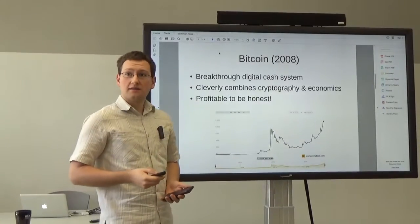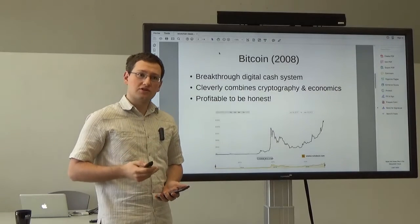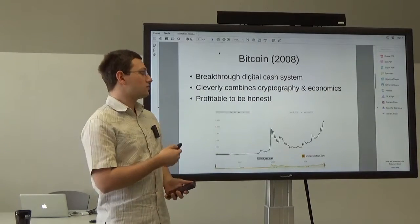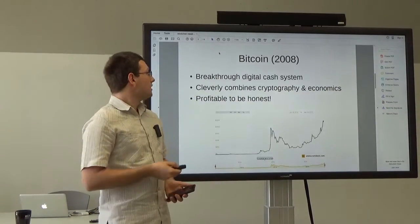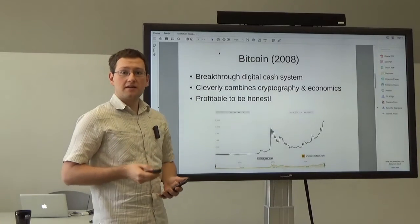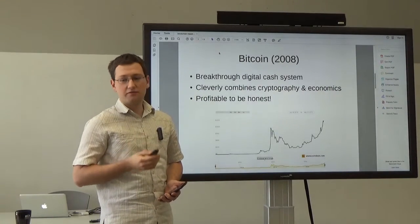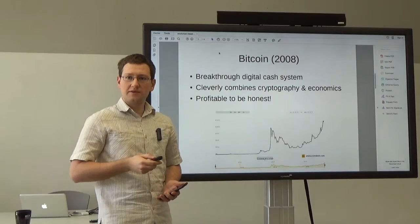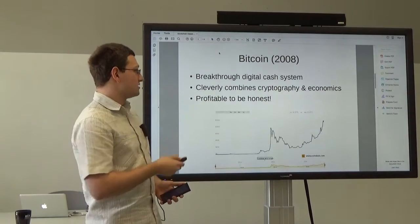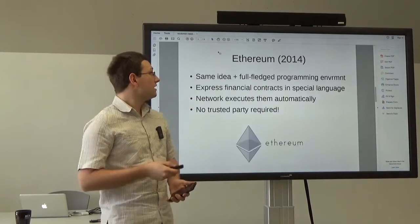In 2008, a breakthrough research in computer science brought us Bitcoin, which is a digital cash system. It combines cryptography and economics in a very clever way, such that it is profitable for the participants to be honest. And here you can see how the price increased of this digital cryptocurrency, you may have heard of.